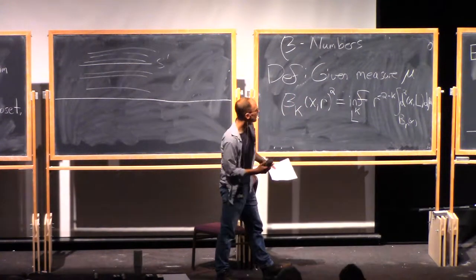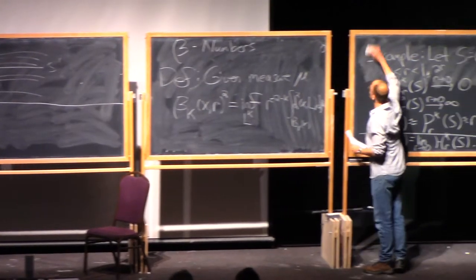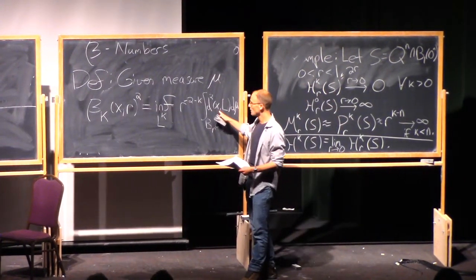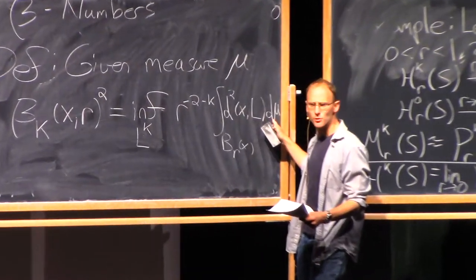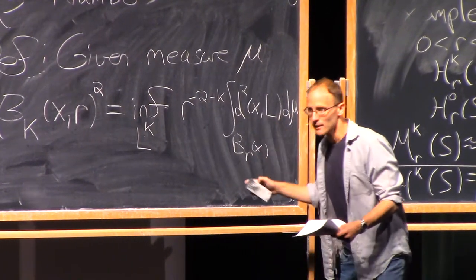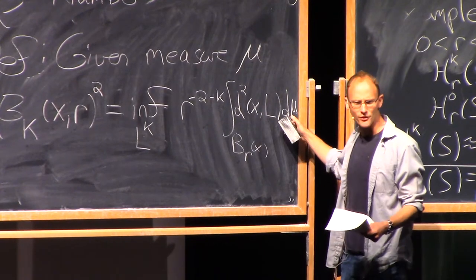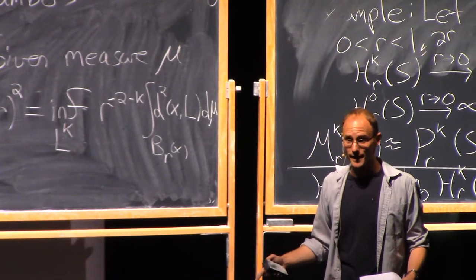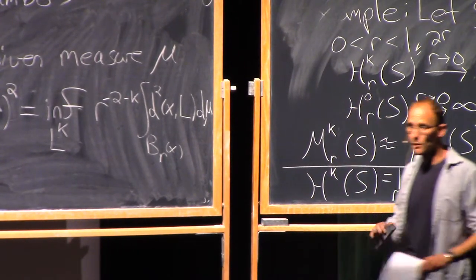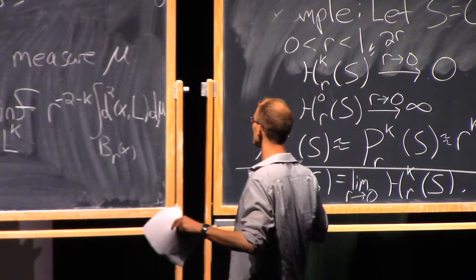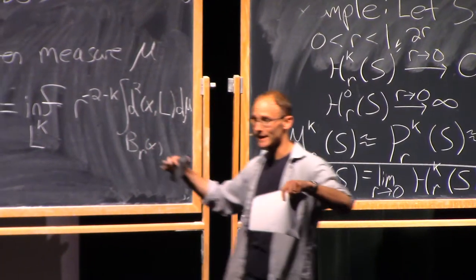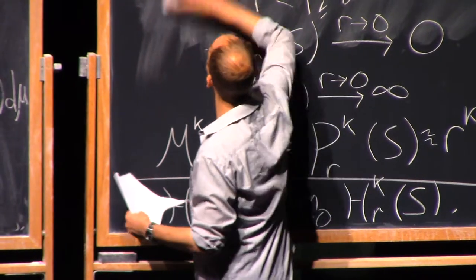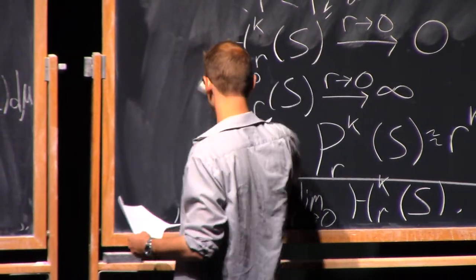Note, this is not controlling how close L is to mu. It's controlling how close mu is to L. Mu could be zero, for instance. And this is zero. If our set was zero, it would not be close to an affine plane the way we defined it before. So all we're asking now is how close mu is to being contained in a plane, but there can be holes.